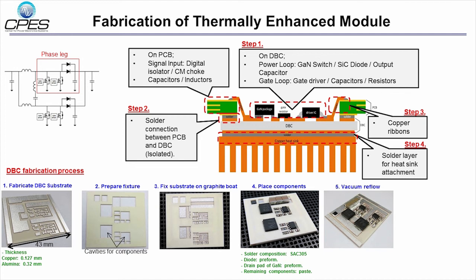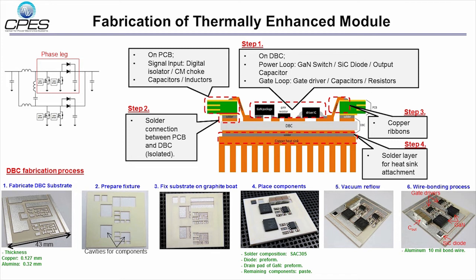Finally, Figure 5 shows the packaged module after the vacuum reflow process. Here you can see that all components are fixed in positions. Since we used the silicon carbide diode in a bare-die form, the top side was connected by 10 mil aluminum bond wires.